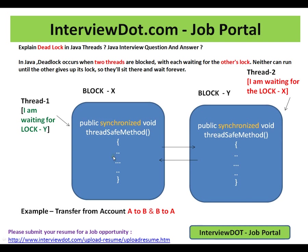Thread one transfers the amount from A to B and thread two transfers the amount from B to A. Thread one has started block X and is waiting for block Y to be done, but thread two already started block Y and completed it, and is now waiting for block X to execute. So both threads are waiting for each other — it's never going to happen. This is a deadlock.